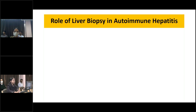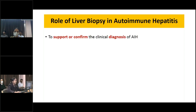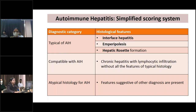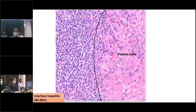Histopathology contributes tremendously in the diagnosis of autoimmune hepatitis and has various roles. The most important is to support or confirm the clinical diagnosis. Typical features of autoimmune hepatitis are interface hepatitis, emperipolysis, and hepatocytic rosette formation. Compatible features are those of chronic hepatitis with lymphocytic infiltration without all typical features. Atypical features suggest other diagnoses such as biliary diseases, viral hepatitis, or NAFLD.